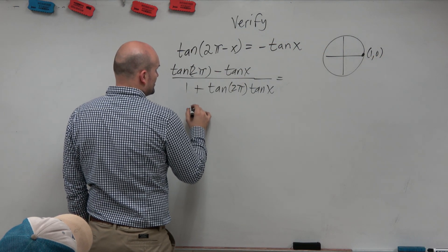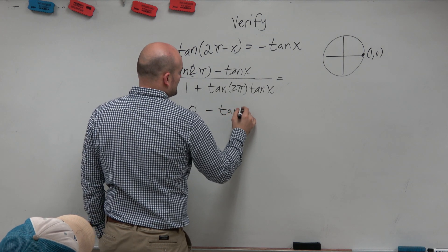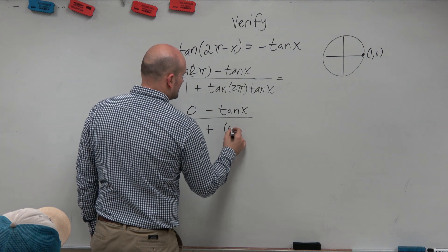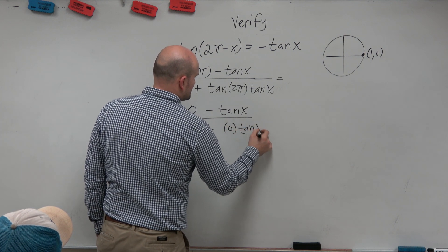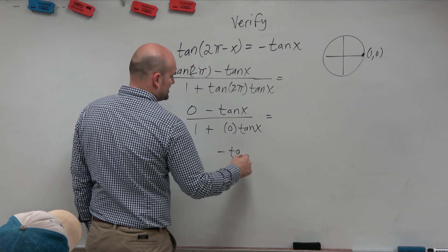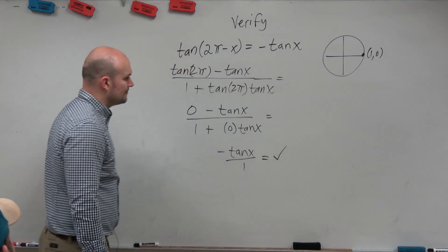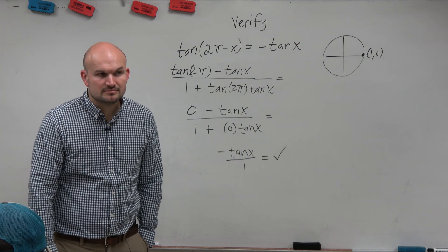So basically, we have 0 minus tangent of x all over 1 plus 0 times tangent of x, which is basically negative tangent of x over 1. Which there we go. Verify.